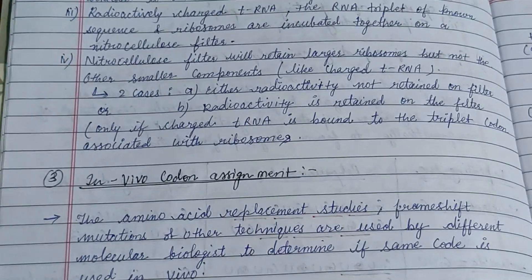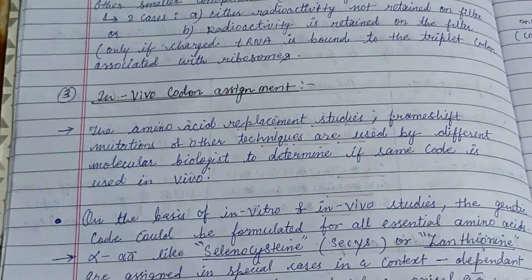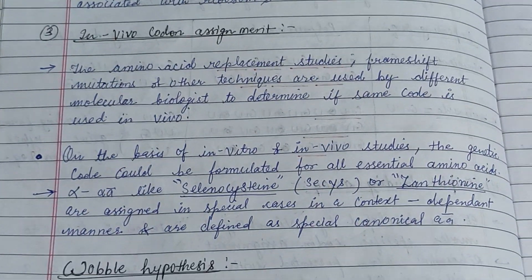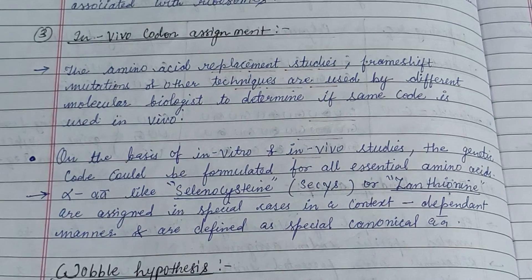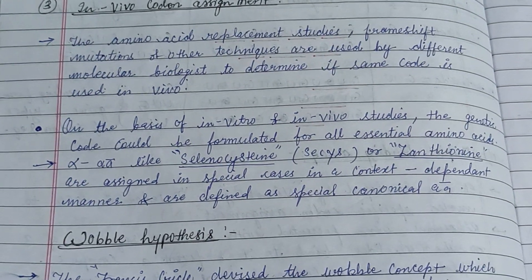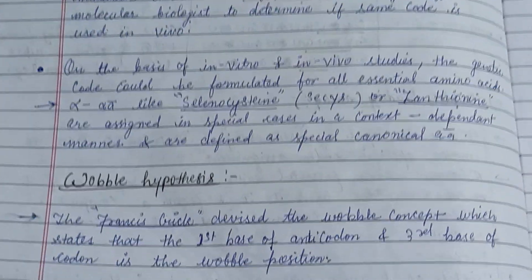For in vivo codon assignment, aminoacyl-tRNA replacement studies, frameshift mutations, and other techniques were used by different molecular biologists to determine if the same code is used in vivo.